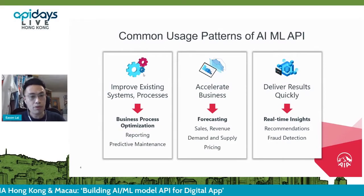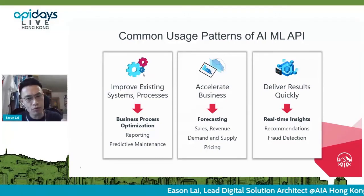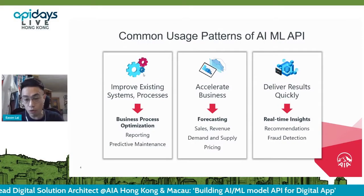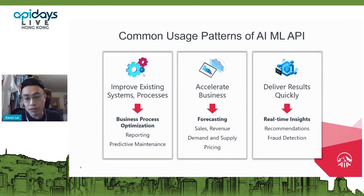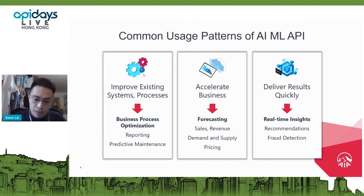For example, for our insurance products — given what a customer already holds, what is the next best product to recommend? We need to train sophisticated machine learning models to recommend missing products to end customers or tell our agents and business planners what product to suggest. We can also do fraud detection — if someone keeps making claims, we can see the pattern, learn it, train a model, and input behaviors into the API to detect whether it is a fraudulent claim or not.